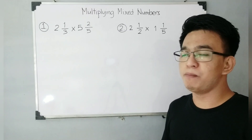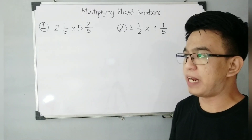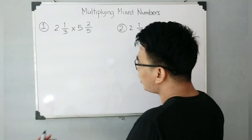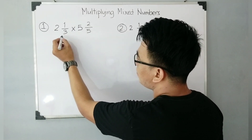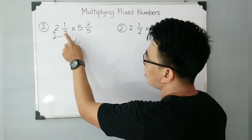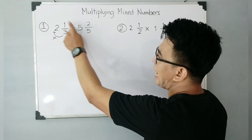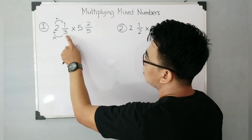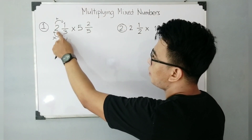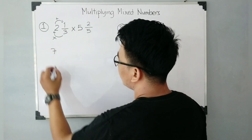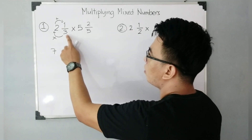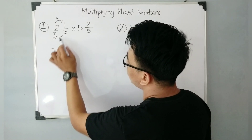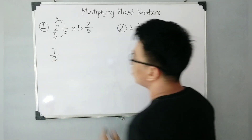First, you need to convert the mixed numbers into an improper fraction. So, how do we convert 2 and 1 third? What we need to do is multiply your denominator by the whole number, and then the product must be added to the numerator. So, 3 times 2 gives you 6, plus 1, that is 7. This will be your numerator, and for your denominator, all you need to do is copy the original denominator. So, the converted improper fraction of 2 and 1 third is equal to 7 over 3.